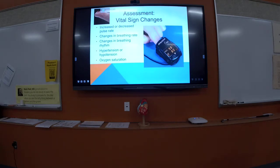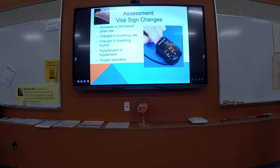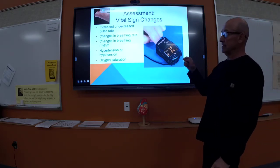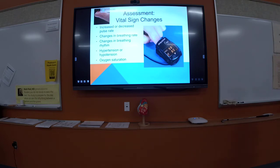Changes in SpO2 won't necessarily happen right away. An asthmatic or emphysema patient with air trapping will maintain a good SpO2 for a long time. The patient will have difficulty breathing long before their SpO2 changes. What you'll see right away is an increase in respiratory rate — they're trying to compensate — and an increase in pulse rate as well.